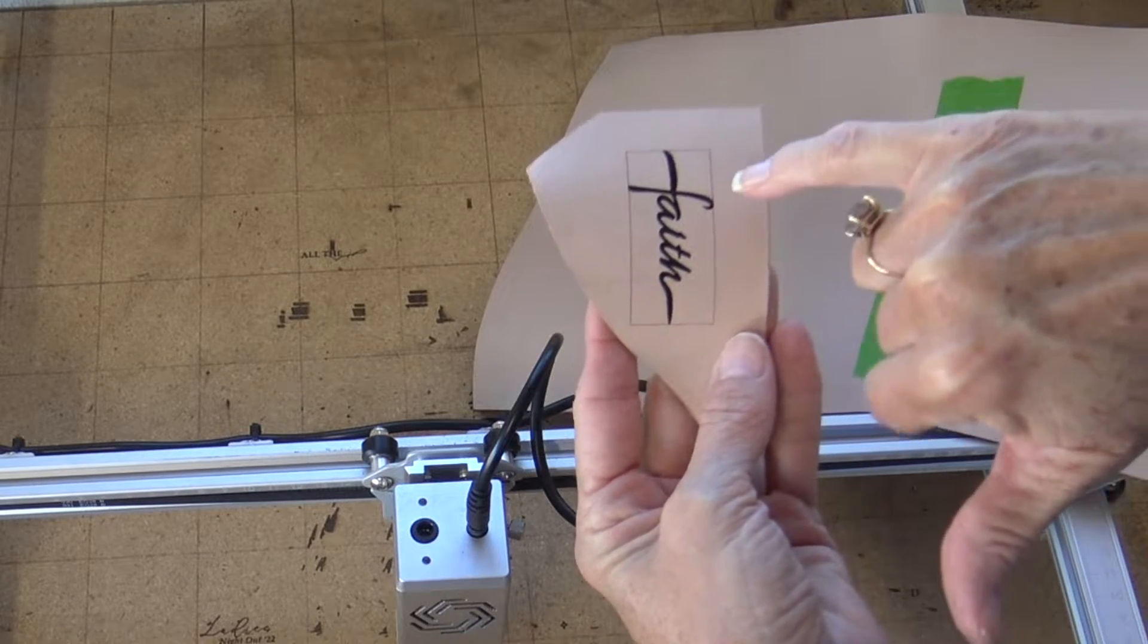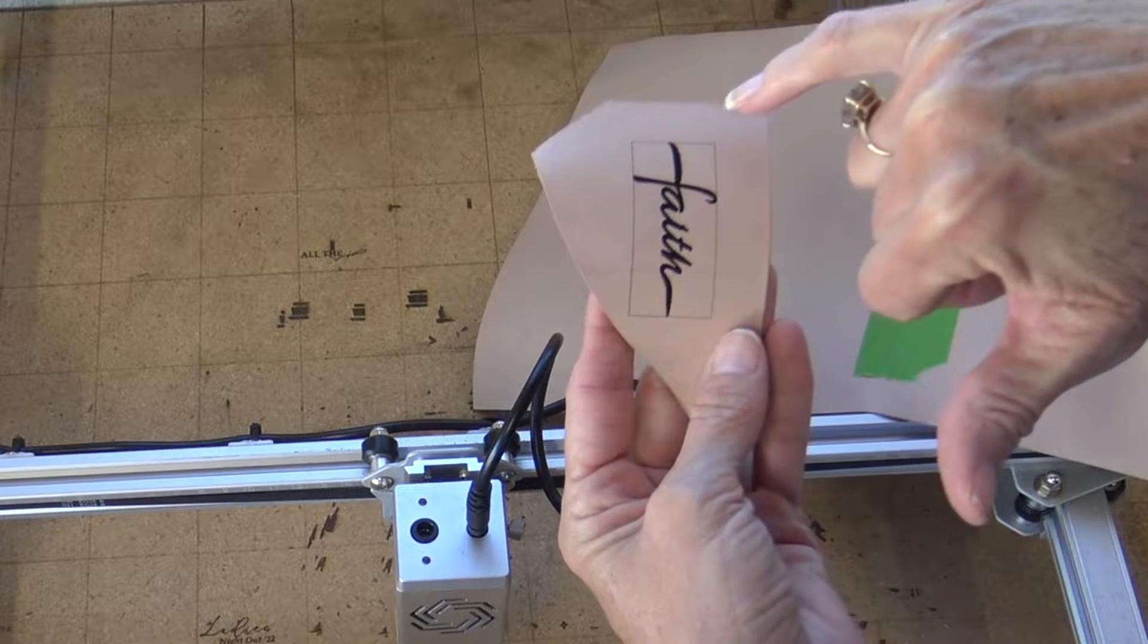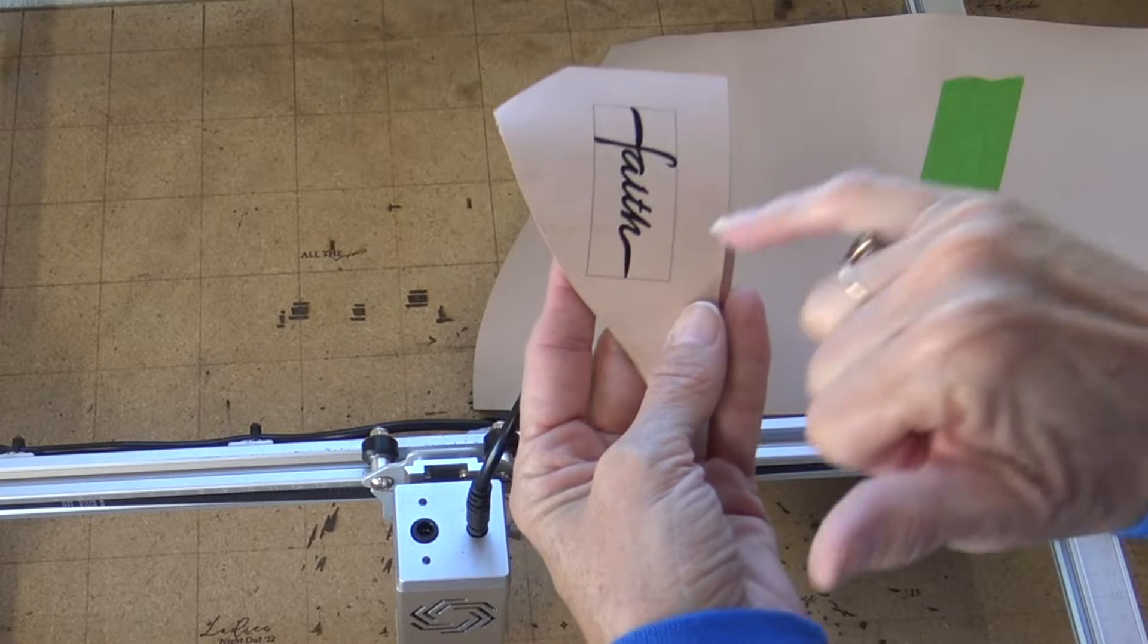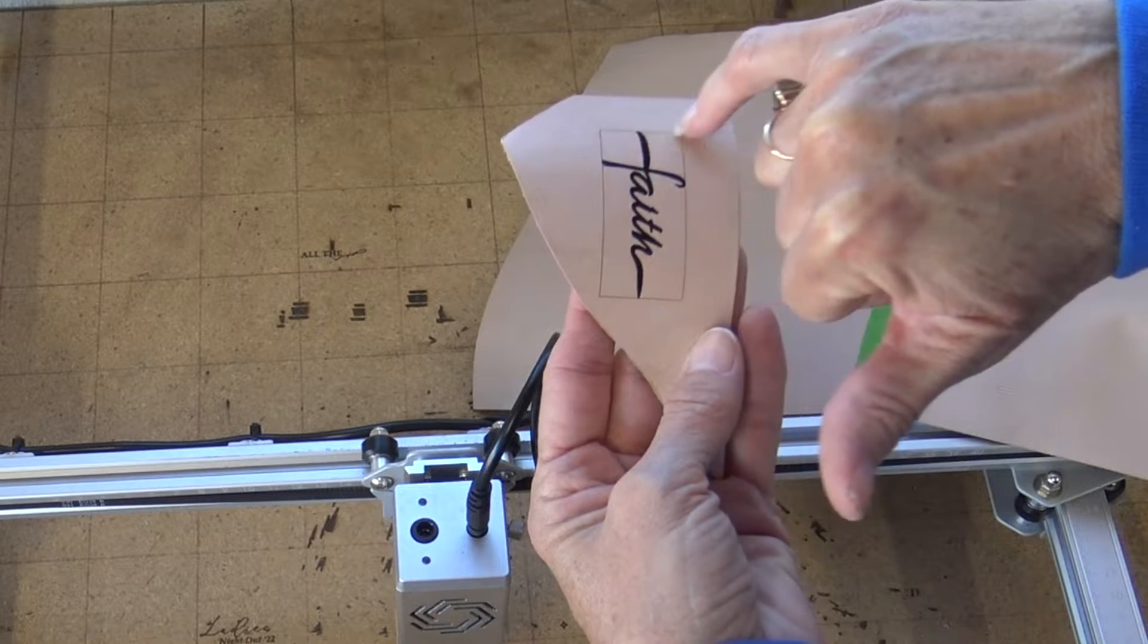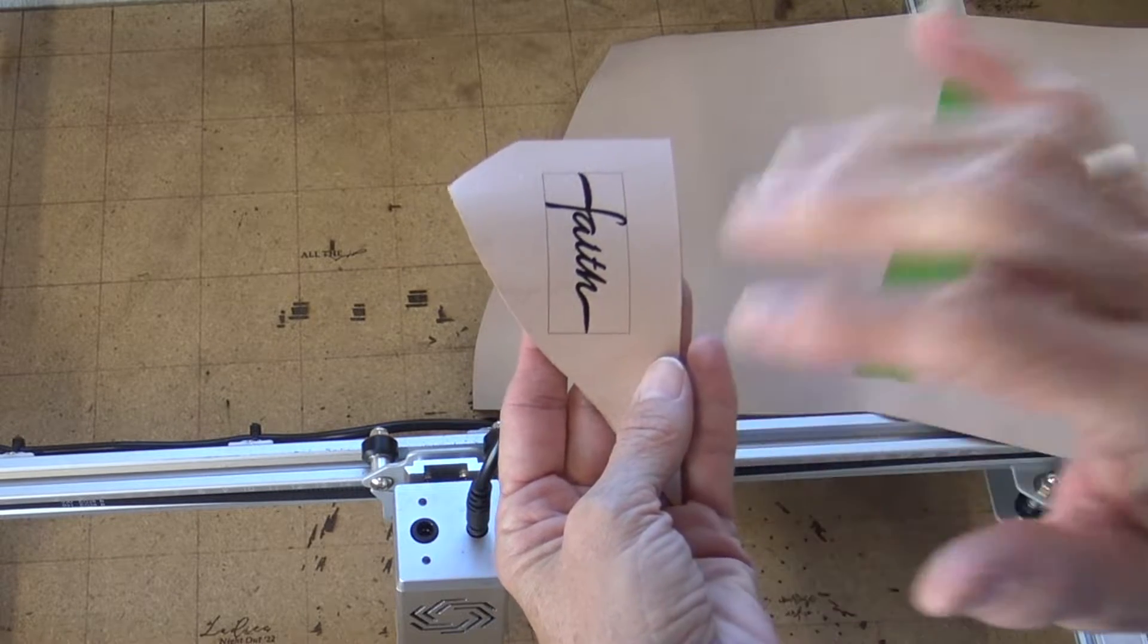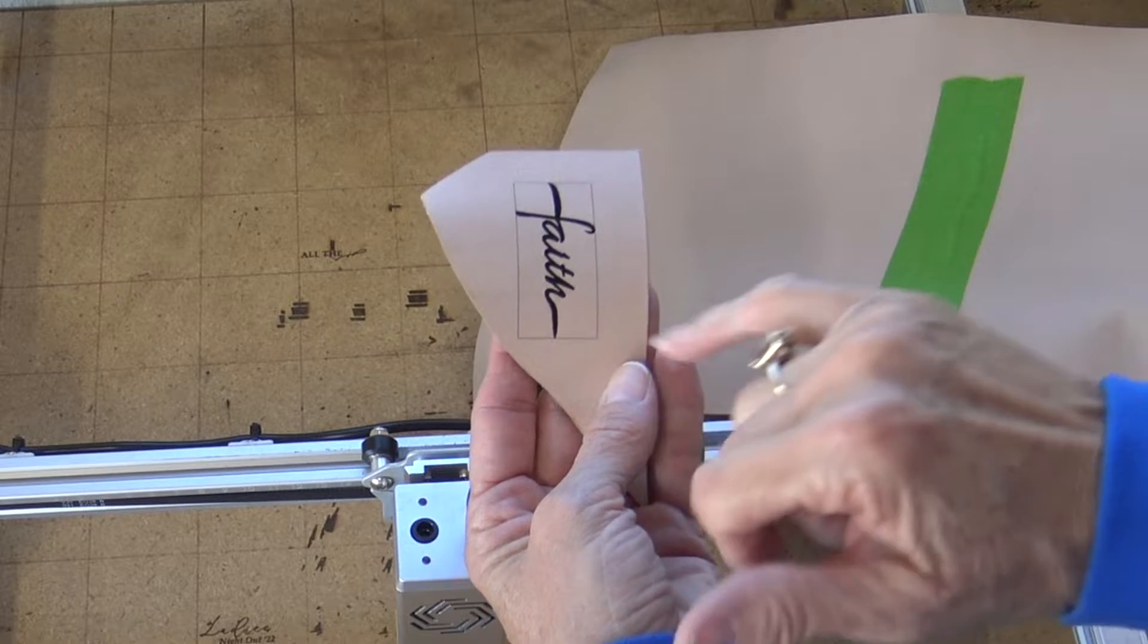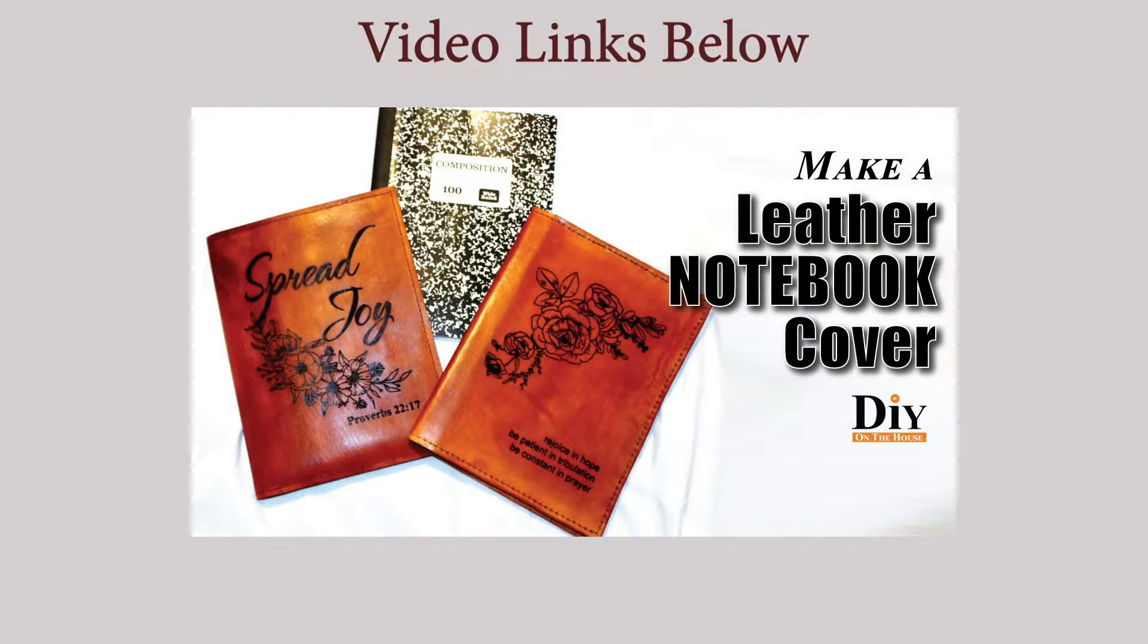And I wanted to show you, first of all, I think I might've already mentioned it. When you save your file, save it just right at the edge of your artwork. And then when you tell the machine to frame it on leather, it actually burns a line in there, which I do not want. So I wanted to show you, I rarely tell it to frame when I'm using leather, because it does leave that line. This is a Bible cover. And I have a video on how I make the Bible covers, the links down below.